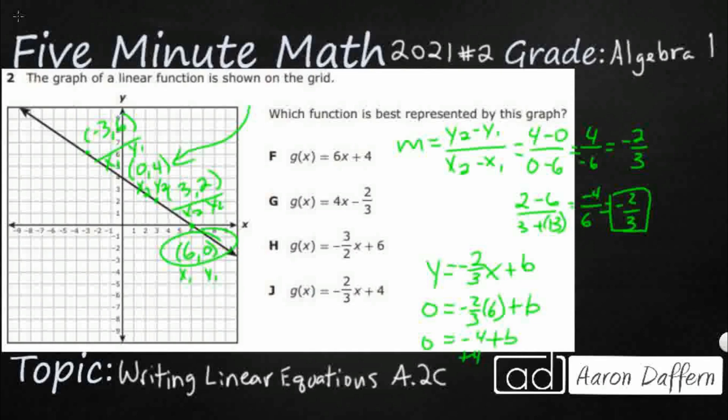So zero equals that's going to be negative four plus b. I need to add four to both sides to get that four over the other side. And guess what? Four equals b, which is what we got.